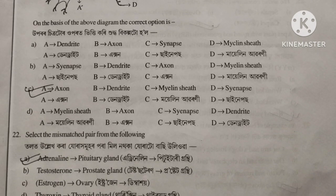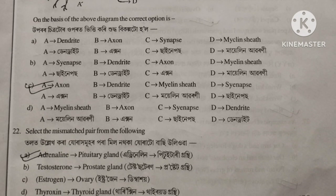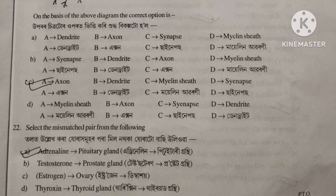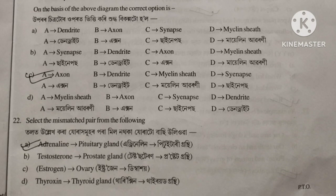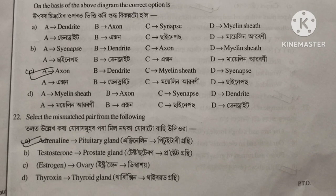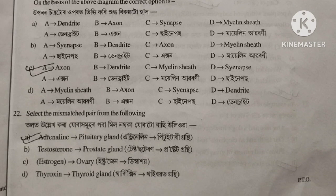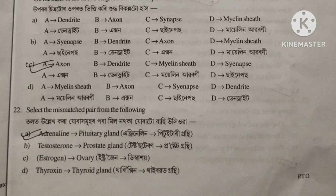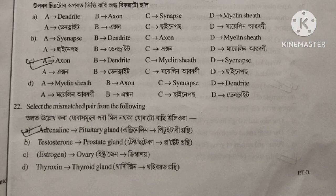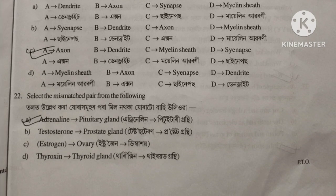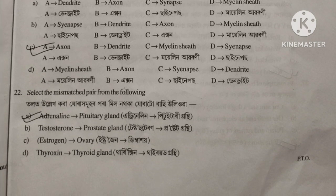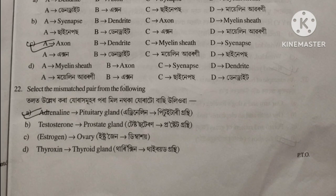Question 22: Andrew nil pituitary gland. Option A is correct.